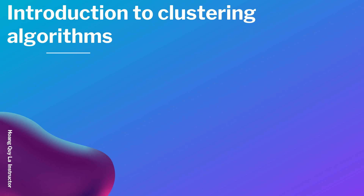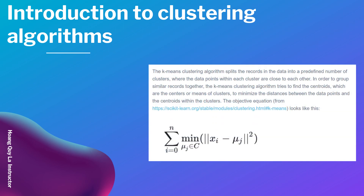The k-means clustering algorithm splits the records in the data into a pre-defined number of clusters where the data points within each cluster are close to each other. In order to group similar records together, the k-means clustering algorithm tries to find the centroids — the centers or means of clusters — to minimize the distances between the data points and the centroid within the cluster. The objective equation is a sum from i equals zero to n, where mu_j belongs to C, and then xi minus mu_j squared.